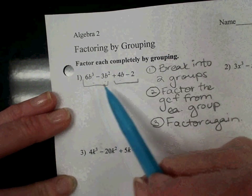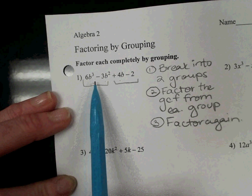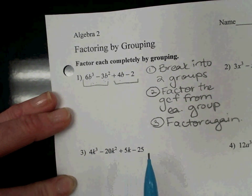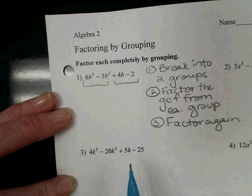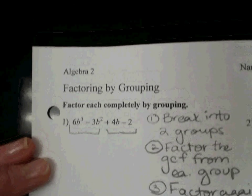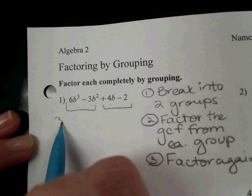All right, so we have these two groups. Now I need to look for a GCF. So I'm looking at 6b³ minus 3b². What is the GCF of those two? 3b², good.